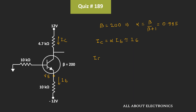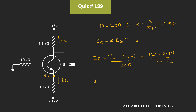This emitter current Ie can be given as (−Ve − (−12V)) divided by Re, which equals (12V − 0.7V) divided by Re — that is 11.3V divided by the emitter resistance. We have been given that all resistors have a tolerance of ±5%, so let's write the emitter current as 11.3V divided by Re. Call this the first equation.